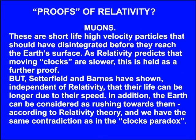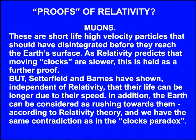Muons are short-life, high-velocity particles that should have disintegrated before they reach the Earth's surface. As relativity predicts that moving clocks are slower, this is held as a further proof. But Setterfield and Barnes have shown, independent of relativity, that their life can be longer due to their speed. In addition, the Earth can be considered as rushing towards them according to relativity theory — and we have the same contradiction as in the clock paradox.